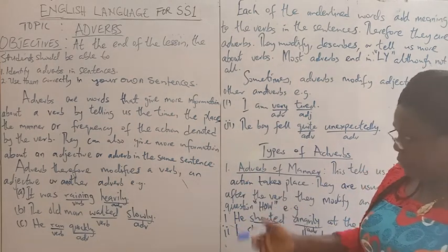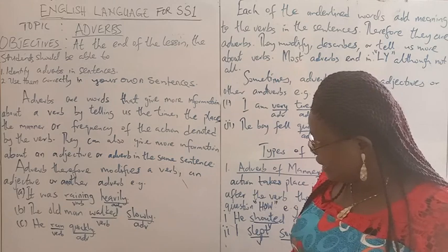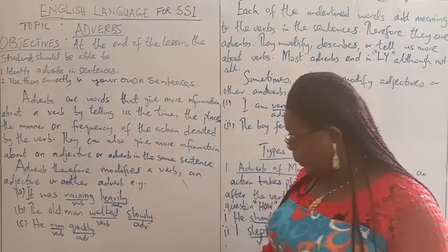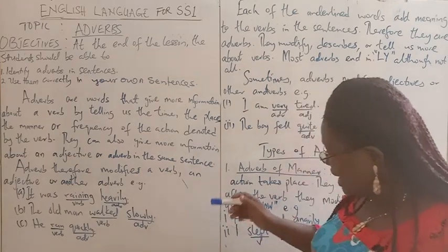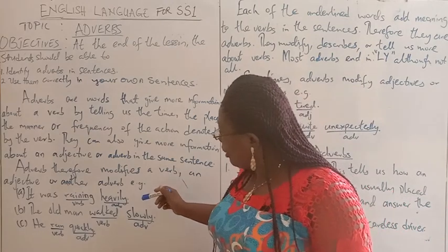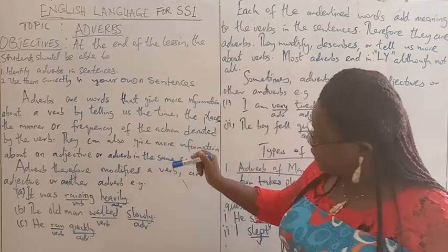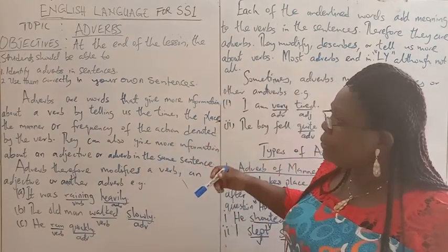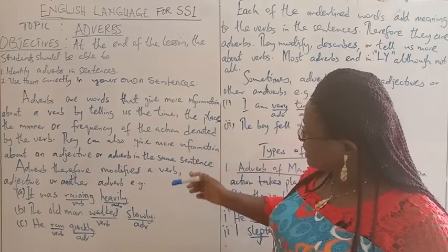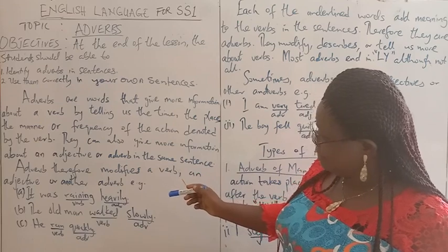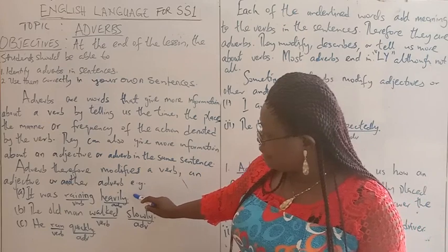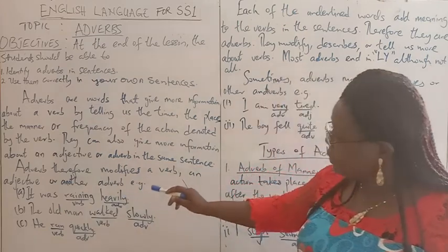For example: it was raining — it was raining heavily. 'Heavily' there is telling us how the rain was falling. Was it lightly or was it heavily? So 'heavily' is, therefore, an adverb modifying the verb 'raining'.